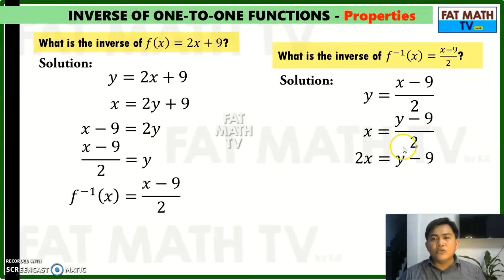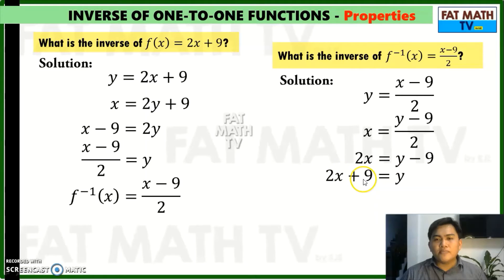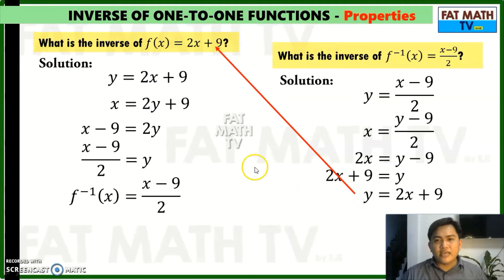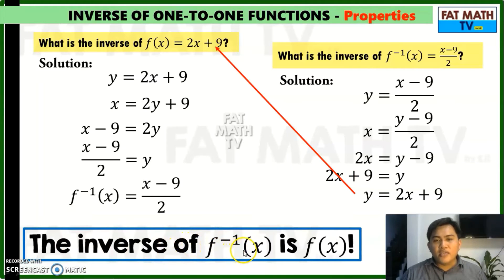The 2 here will cancel, so no more 2 here, and y minus 9 will be left on the right side of the equation. Since we are solving for y, add 9 to both sides of the equation, and we will get 2x plus 9 on the left and y on the right. So this is the same as y equals 2x plus 9. So if you're asked to find the inverse of f inverse, you will just go back to the original function. That's the first property of the inverse of a one-to-one function — the inverse of the inverse of f is f itself. So the inverse of f inverse of x is f of x. That's property number 1.